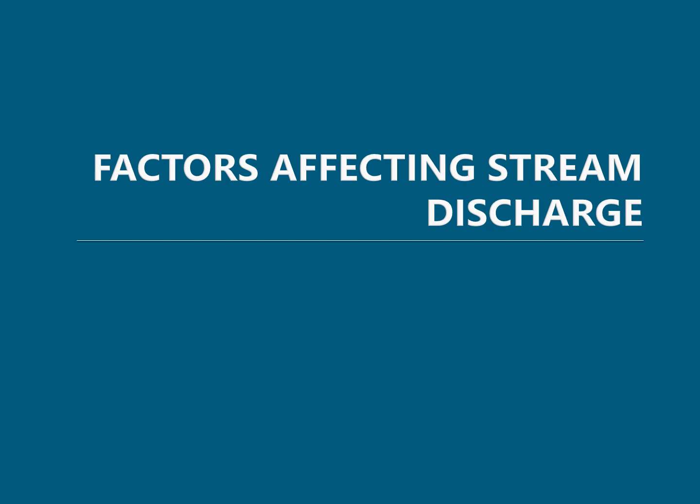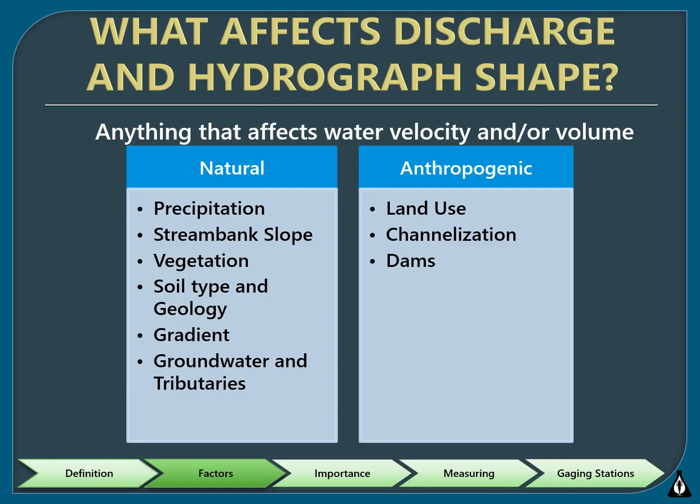Next, we'll talk about the factors that affect stream discharge. Anything that affects velocity or volume of water can affect a stream's discharge and the shape of its hydrograph. This includes geology and soil type, gradient of the valley sides and stream banks, vegetation in the surrounding floodplains, type and amount of precipitation, channelization, dams, and overall land use. Groundwater springs, adjacent wetlands, and tributaries also affect the total flow in a stream.